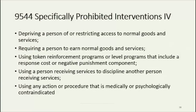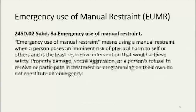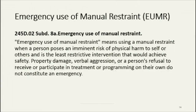Many services now fall under the rule, and some of these prohibited interventions may sound like duplication from current licensing standards. This was meant to be a consistent set of standards governing services to persons with developmental disabilities or related conditions. Emergency use of manual restraint is defined in 245D as using a manual restraint when a person poses an imminent risk of physical harm to self or others and is the least restrictive intervention that would achieve safety. Property damage, verbal aggression, or a person's refusal to receive or participate in treatment or programming on their own do not constitute an emergency under this definition.